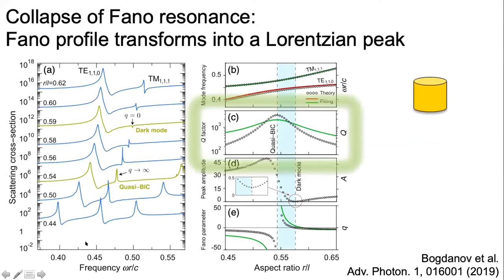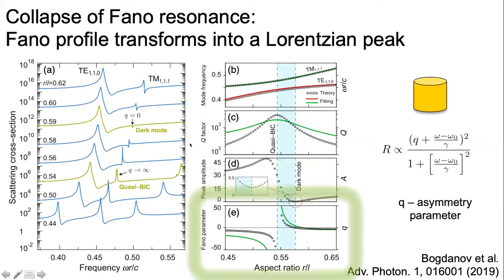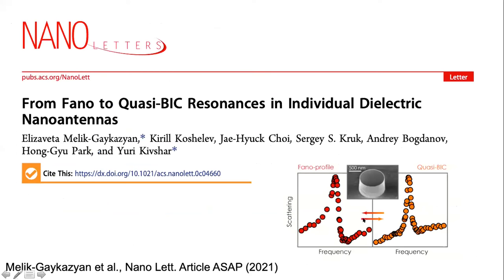Another sign of a quasi-BIC mode is the diverging asymmetry parameter in the scattering spectrum. The line shape can be described by the Fano profile, and in the vicinity of the quasi-BIC mode, the Fano asymmetry parameter changes sign. We wanted to realize this observation at the nanoscale.